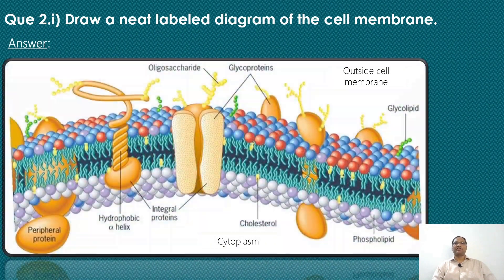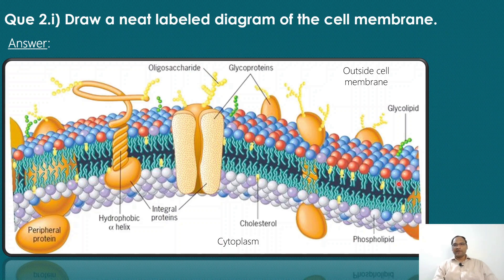The next question: draw a neat labeled diagram of the cell membrane. You should draw the fluid mosaic model of the cell membrane. The diagram should include a peripheral protein, an integral protein acting as a transporter, a phospholipid bilayer with polar heads and hydrophobic tails, as well as oligosaccharides, glycoprotein, glycolipid, and cholesterol. Draw it properly and neatly, as it is for two marks.